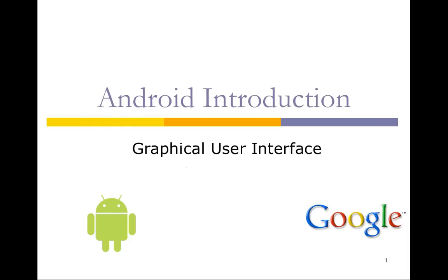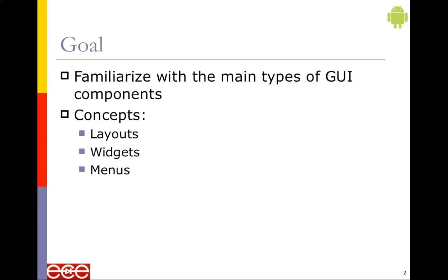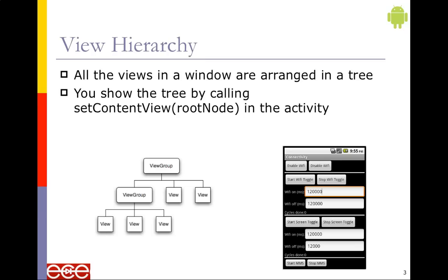Now I'm going to catch up with the graphical user interface information. The purpose of this lecture is to familiarize yourself with the GUI components: the layouts, the widgets, and the menus. We've seen this already. Here's the view group I promised — I have two more lectures specifically on view groups. When I said we set the context view, we're actually setting it to a starting place in the hierarchy. We can set the context view anywhere we want, actually. We want to set it to the root node by default. All the hierarchy in the windows is arranged in a tree and we can start the tree anywhere.